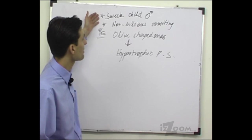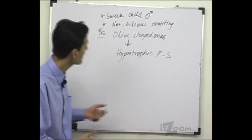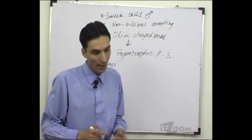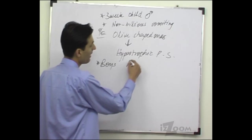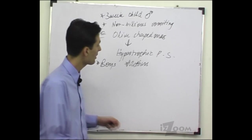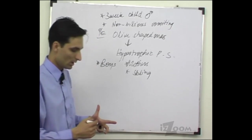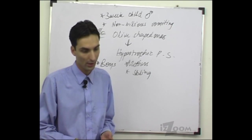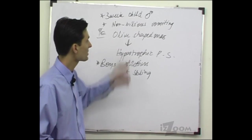In hypertrophic pyloric stenosis, there is non-bilious vomiting of food the child has eaten, and there is an olive-shaped mass in the epigastrium. It is more common in boys and is also more common in patients whose parents, mothers, or siblings have been affected by this disorder — so a positive family history is a risk factor.